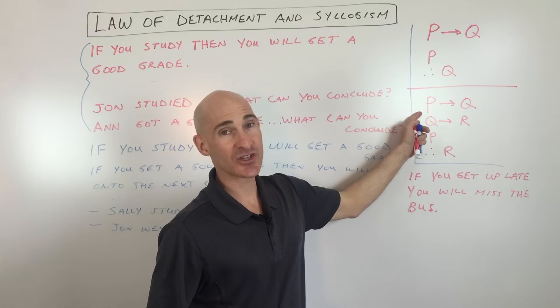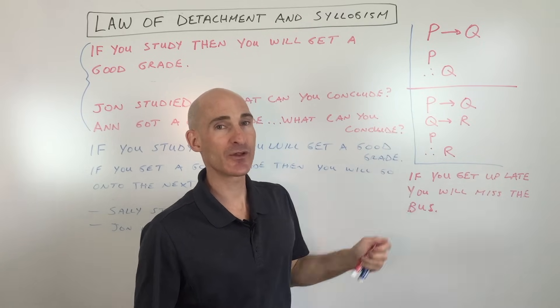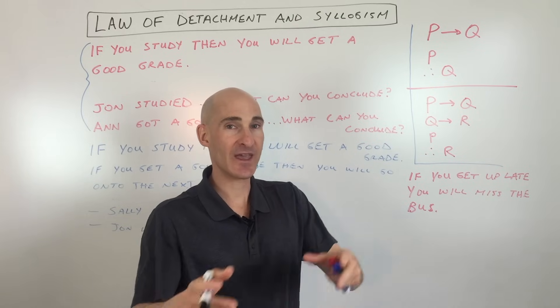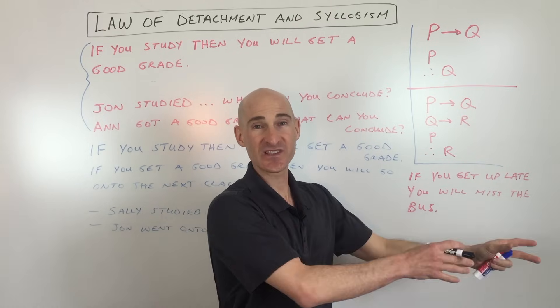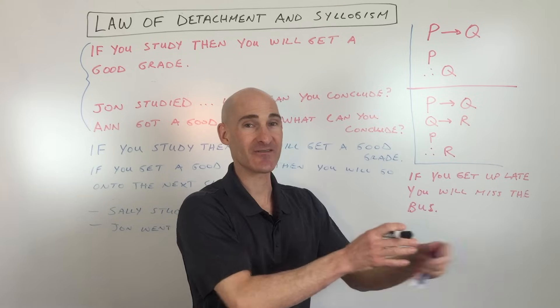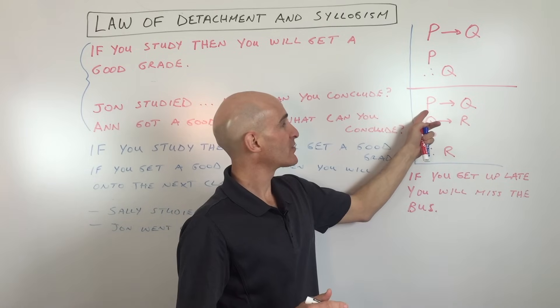Now the law of syllogism is really like the transitive property. You probably learned the transitive property, like if A equals B and B equals C, then A equals C, right? Well it's very similar here with the law of syllogism.